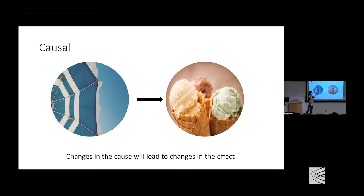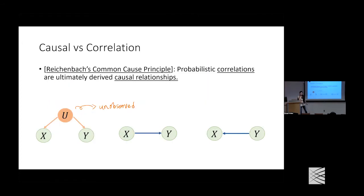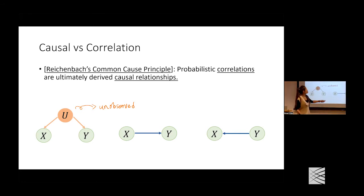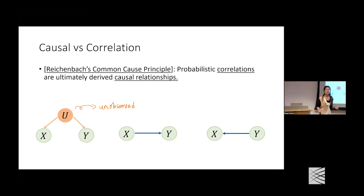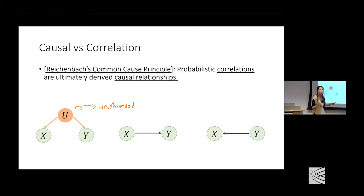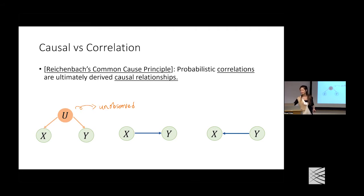The change in the cause leads to the change in the effect. The common cause principle tells us that all correlations observed in data are induced by some causal relationship. If two variables are correlated, it must be one of: X causes Y, Y causes X, or they're caused by something else together. Correlation alone doesn't tell us what action leads to what outcome.